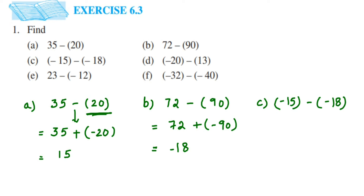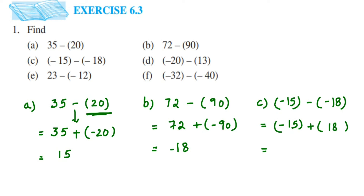The next one is minus 15 minus (minus 18). Instead of subtracting, we add. The first integer remains minus 15. Instead of minus, I put plus and add the additive inverse of minus 18, which is 18. Now we add minus 15 and 18. They have different signs, so we subtract: 18 minus 15 is 3. The greater number is 18, whose sign is positive, so the answer is plus 3, or simply 3.